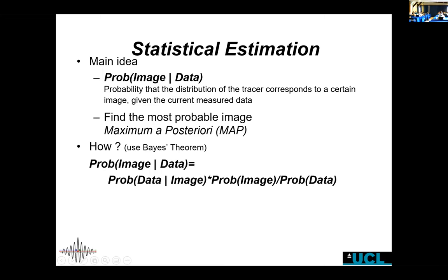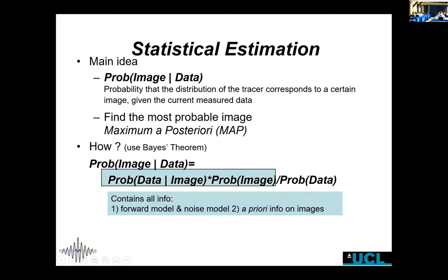Bayes's theorem lets us turn the posterior into the likelihood — the probability of measuring some data given an image — which is a much easier concept because we already have our acquisition model going from image to data. As long as we have a noise model we can compute the likelihood. The denominator (probability of the data) doesn't depend on the image and can be ignored. The prior term — what kind of images are likely — requires some hand-waving. The first approach is to set the prior to a constant and do maximum likelihood reconstruction, where the prior term disappears.